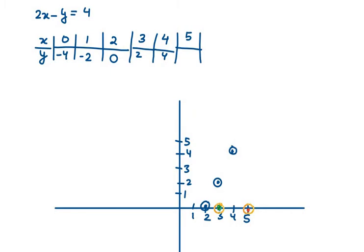2 into 5 is 10. 4 minus 10 is minus 6. So, it will be 6. Now, I will mark 5 comma 6. 5 comma 6 is somewhere here. Now, we need to join this line and find out the value for C.